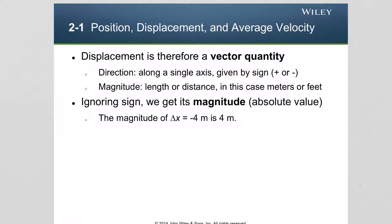The direction of displacement is given along the single horizontal axis, indicated by a positive or negative sign depending on what the calculation yields. The magnitude of the displacement is the length or distance, in the units used for the calculation, that the particle travels between the final and initial positions. When we calculate the displacement and ignore the sign, we get the magnitude of the displacement — for example, if the displacement is negative 4 meters, the magnitude is 4 meters.